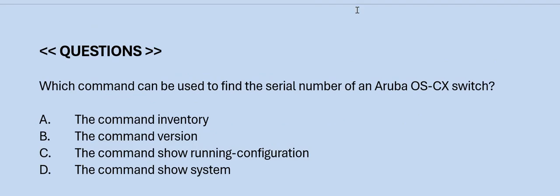Next question: Which command can be used to find the serial number of an Aruba AOS-CX switch? Option A: command inventory. Option B: command version. Option C: show running configuration. Option D: show system. The correct answer is Option D.